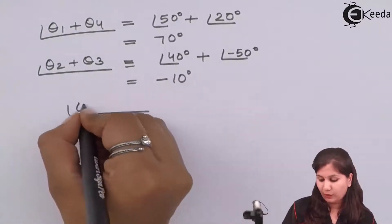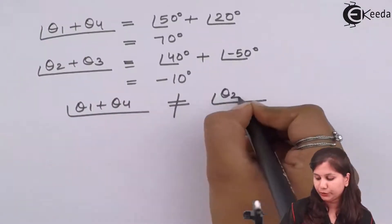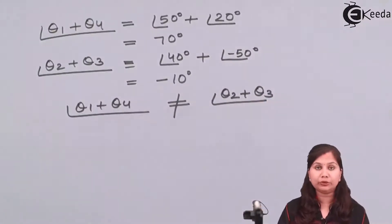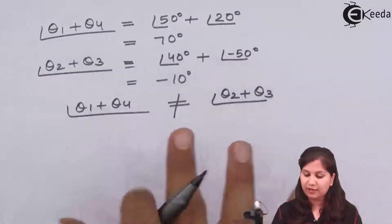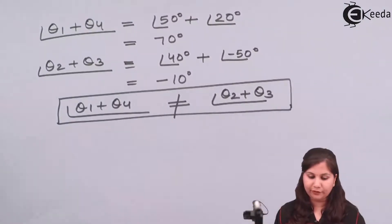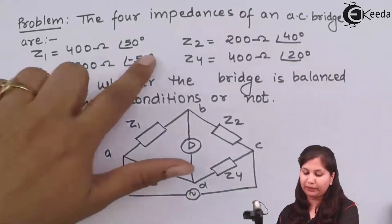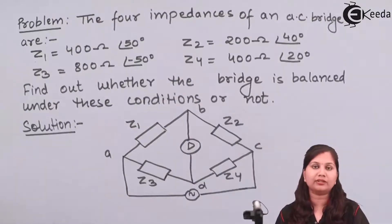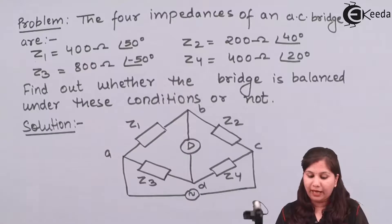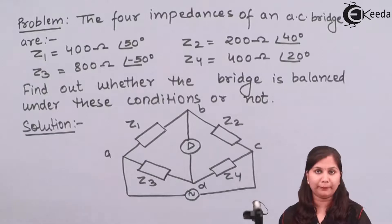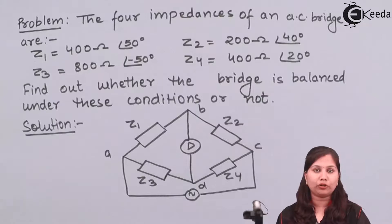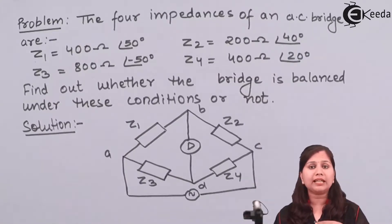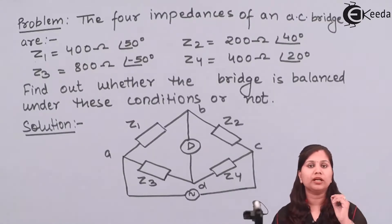We find that theta1 + theta4 is not equal to theta2 + theta3. So the magnitude balance equation is satisfied, but the phase angle equation is not satisfied. Therefore, for these values of the four impedances, the bridge is not balanced. In general, to determine if any bridge is balanced, we check both balance equations. If both are satisfied, the bridge is balanced. If either one is not satisfied, the bridge is not balanced.